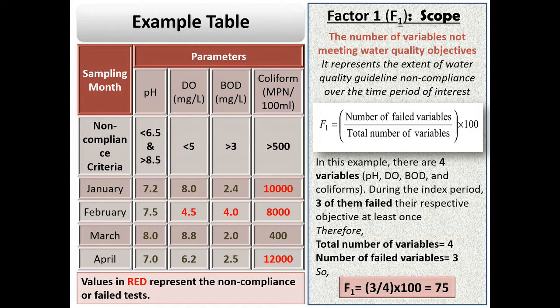In the table, you can see the measured value of pH for all the months are within the limits, whereas not all the values of DO are within specified limits. Similarly, not all the values of BOD and coliform count are within prescribed limits. So, 3 out of a total of 4 parameters or variables fail to meet water quality standard for those variables. Therefore, here scope = (3/4) × 100 = 75. By multiplying 3 fourths by 100, we are converting the fraction into percentage.